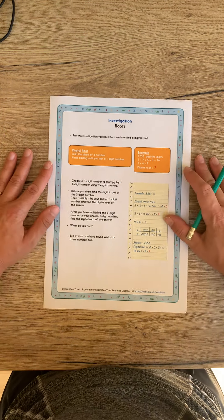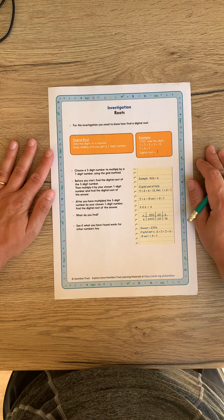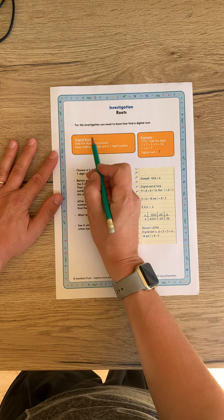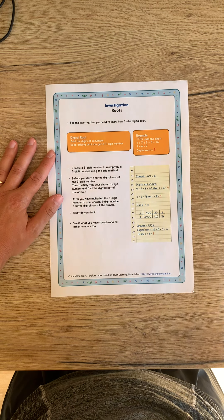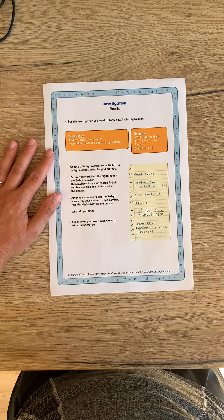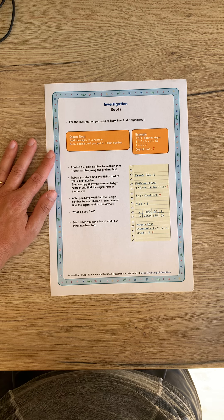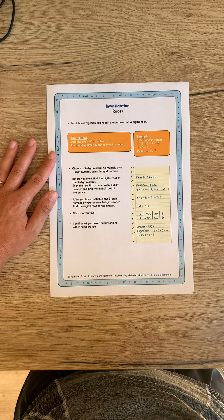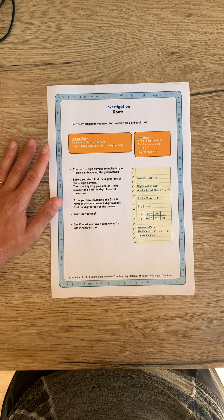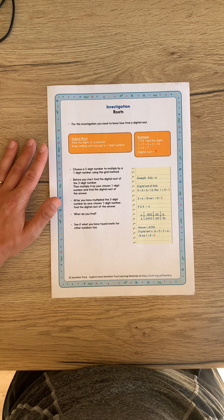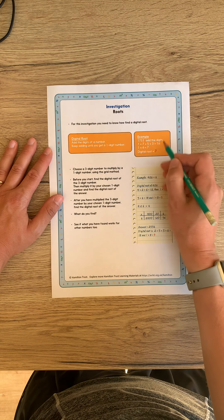And then, the final part of the lesson is an investigation called routes. And it's using digital routes, which is something that we have touched on. And in order to be able to complete this investigation, you need to know how to find a digital route. And how you find a digital route is like this. Well, the example is here as well.